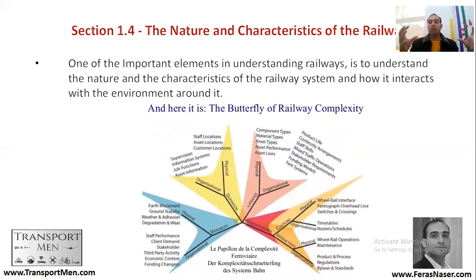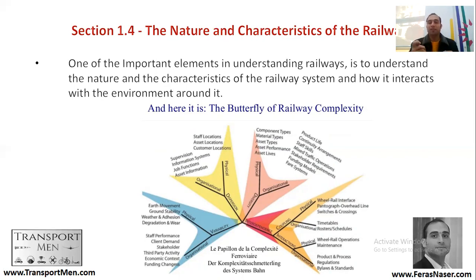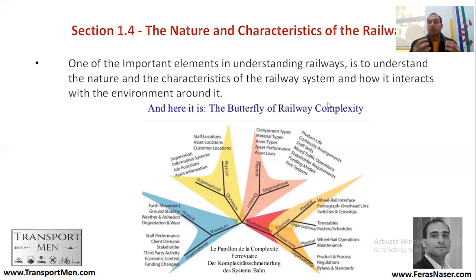Now that we understand how a railway is a system consisting of subsystems, one might ask: what is the difference between a railway as a system and a building as a system? We consider the railway a complex system. Complexity is a big topic, but to simplify it for our purposes, we can understand railways as part of a complex system and examine the characteristics of that complexity.